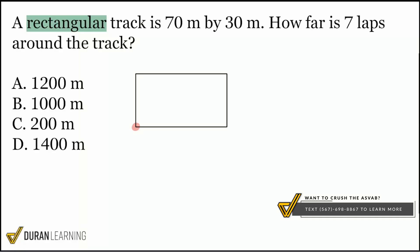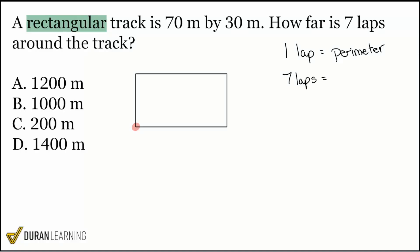So everybody, if one lap equals the perimeter, how am I supposed to calculate seven laps? Let's say I know what the perimeter is. Let's pretend that the perimeter is 20. What am I going to do with that 20 to get seven laps instead of one lap being 20? Yeah, we'll multiply. Exactly. So seven laps would be seven times the perimeter.